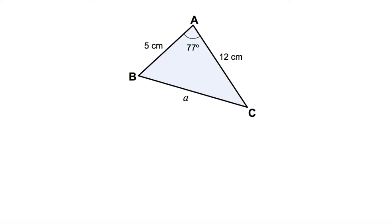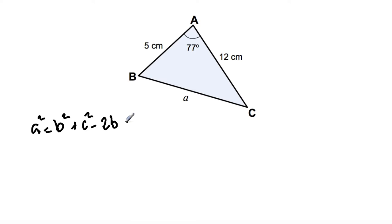The first question is that we need to find the length of a. To do this we're going to be using the cosine rule. To apply the cosine rule we need to have two sides — in this case 5 centimetres and 12 centimetres — and we also need to have an angle, in this case 77 degrees. Therefore we're going to be using this equation: a squared is equal to b squared plus c squared minus 2bc cos theta.